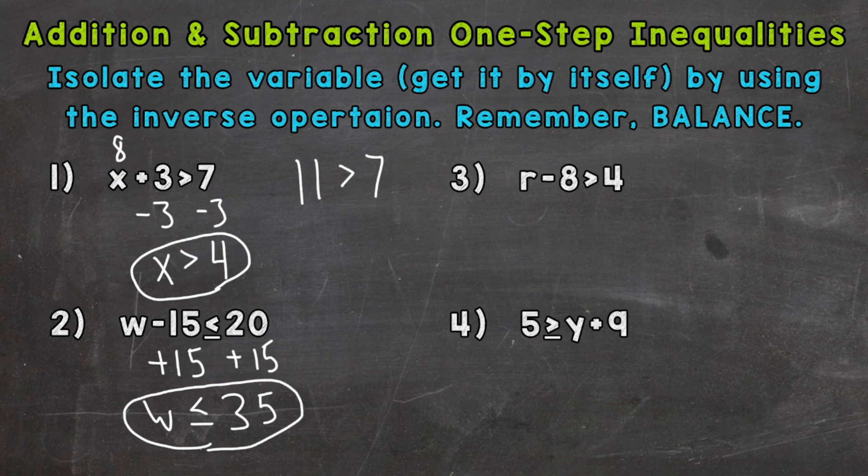So any number less than or equal to 35 would be a solution to that inequality. So let's try one out. Let's try 20. 20 is less than 35. Let's plug in 20 for w. 20 minus 15 is 5. Is 5 less than or equal to 20? Yes. So any number less than or equal to 35 would be a solution for that inequality.